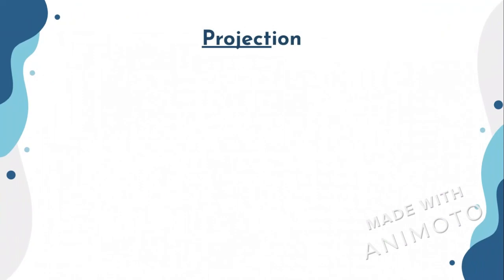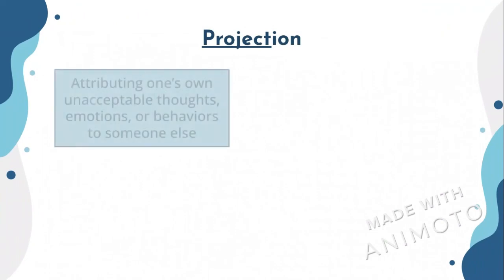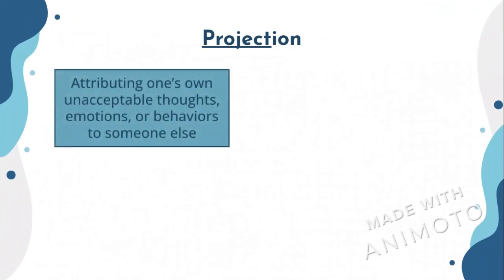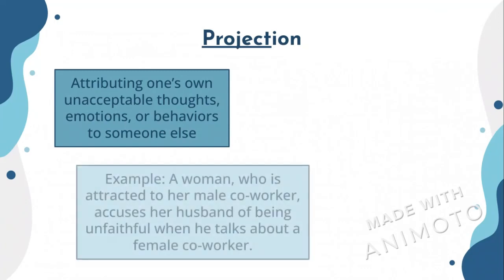The next defense mechanism is projection. Projection is attributing one's own unacceptable thoughts, emotions, or behaviors to someone else. An example of projection is when a woman is attracted to her male co-worker, and she then accuses her husband of being unfaithful when he talks about his female co-worker.